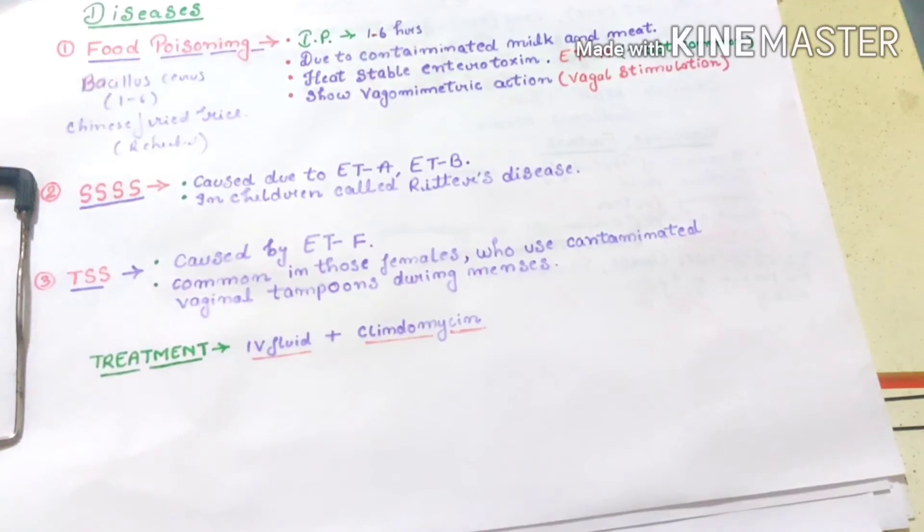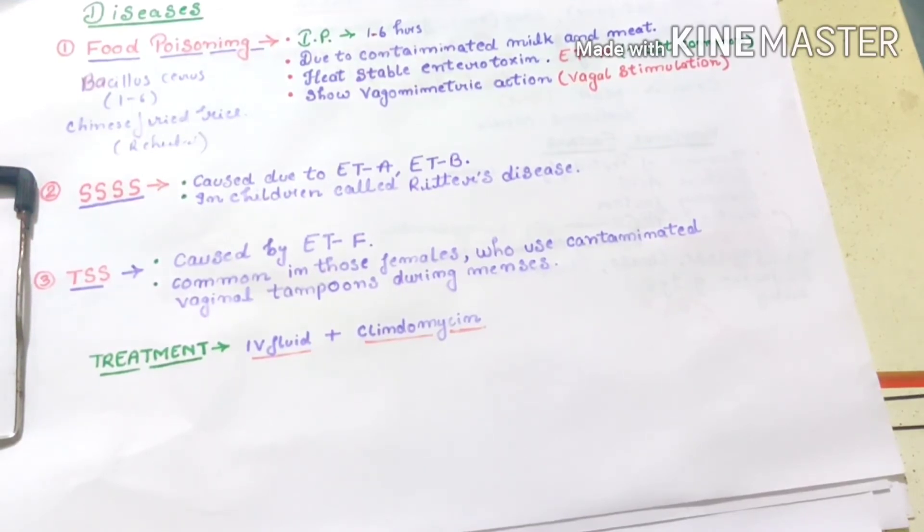It is a heat stable enterotoxin, and the most common enterotoxin is ETA. Then it shows vagomimetic action, that means vagal stimulation, nausea feeling, vomiting and all.